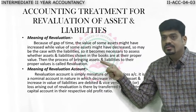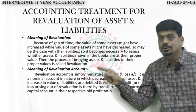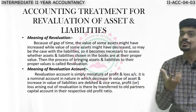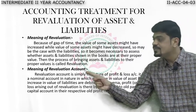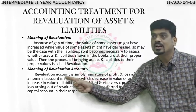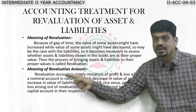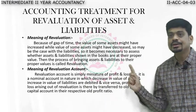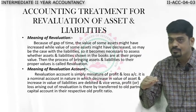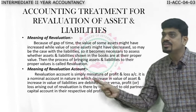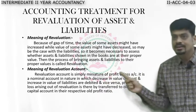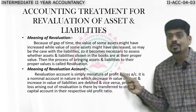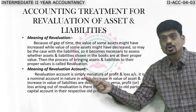To bring assets and liabilities to their correct value, we account for their increased or decreased value in a special account called the revaluation account. The revaluation account is very similar to the profit and loss account — debit all expenses, credit all income. Whatever is decreasing or increasing in value, we adjust in the revaluation account. The revaluation account is a miniature of profit and loss account and is a nominal account in nature.